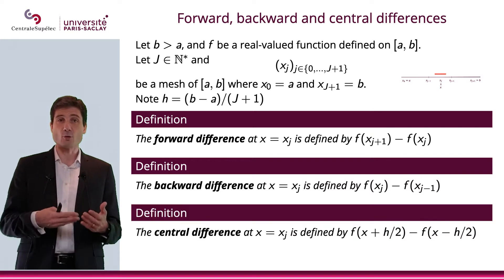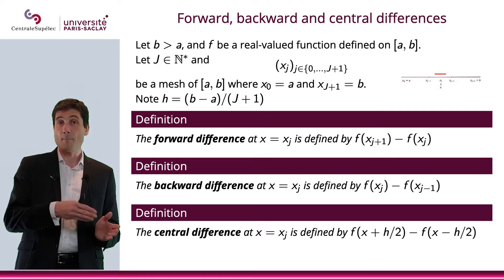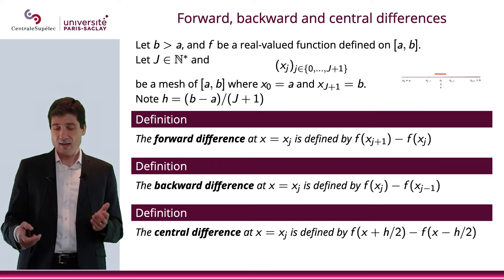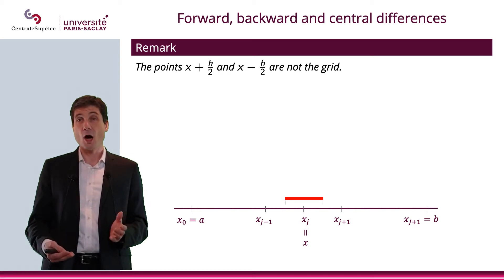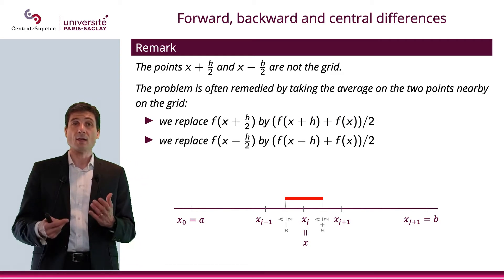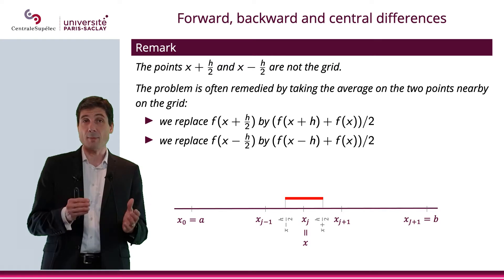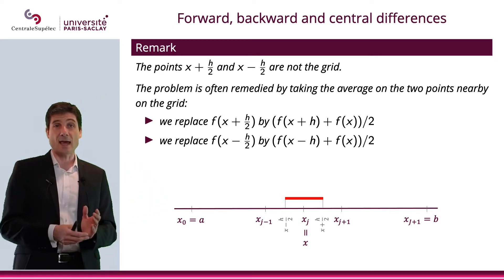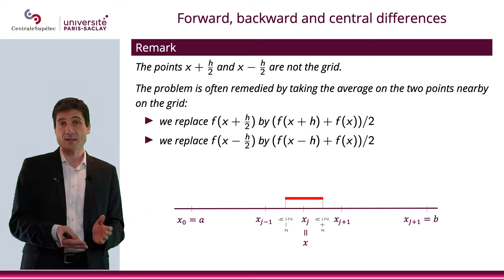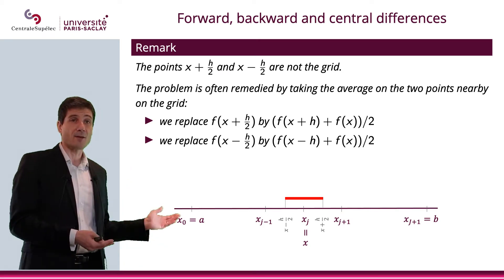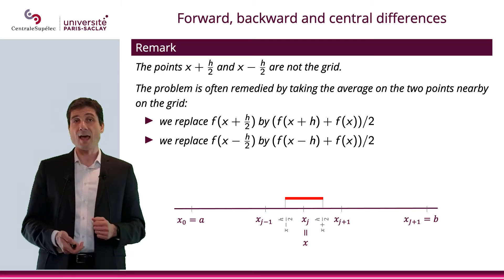Finally, I can define the central difference at a point x, which will be f(x + h/2) − f(x − h/2). Now, as you can see, x + h/2 and x − h/2 are not on the grid. So what I will need to do is remedy this problem by taking the average of the two nearby grid points, which means that f(x + h/2) will be approximated by [f(x+h) + f(x)] / 2.